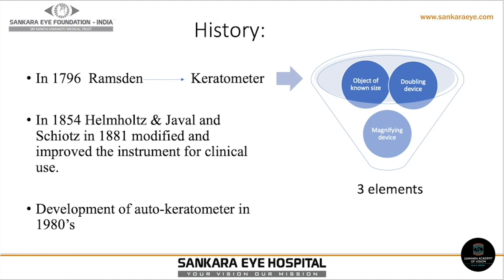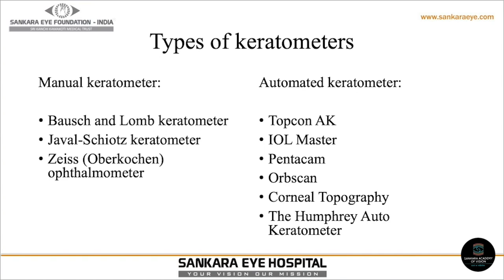Let's come to types of keratometers. We broadly classify into two categories: manual and automated. In manual, we have the Bosch and Lomb keratometer, which is the most commonly used, the Jawal-Schiats keratometer, and the Zeiss ophthalmometer. In automated, we have the Topcon keratometer, IOL Master by Zeiss, Pentacam, Opscan, corneal topography, and the Humphrey auto keratometer, all of which give us the keratometric values.